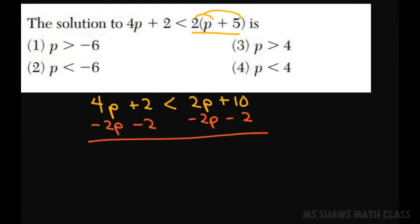When you do that, you're going to get 2p is less than 8. You divide both sides by 2.